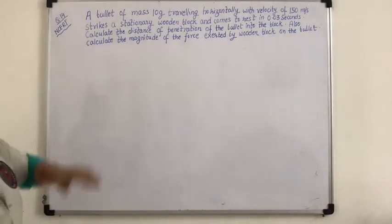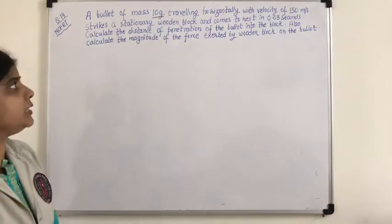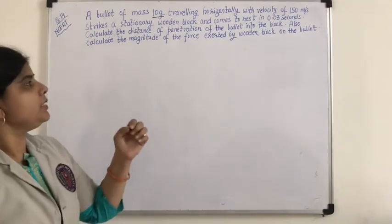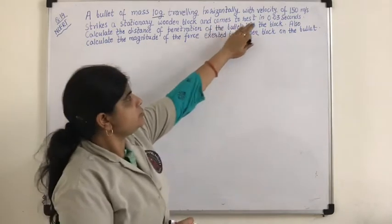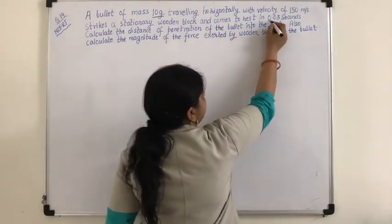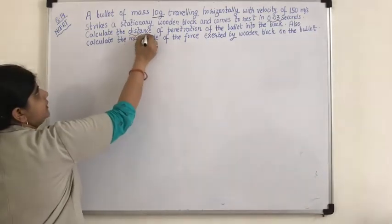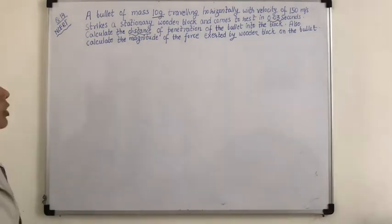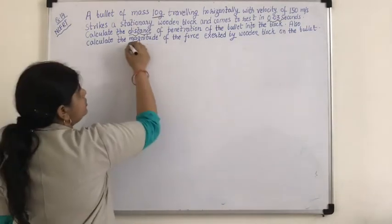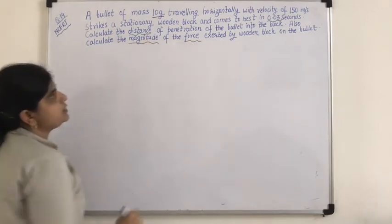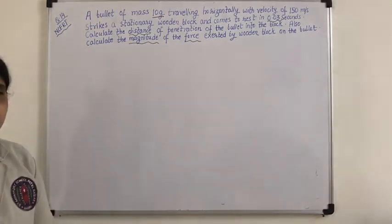A bullet of mass 10 gram traveling horizontally with a velocity of 150 meters per second strikes a stationary wooden block and comes to rest in 0.03 seconds. Calculate the distance of penetration of the bullet into the block. Also calculate the magnitude of force exerted by the wooden block on the bullet.